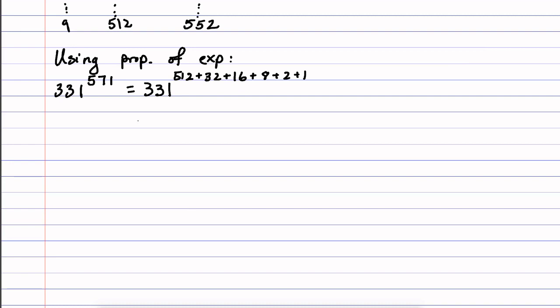512 plus 32 plus 16 plus 8 plus 2 plus 1. And then the point is, this breaks up as a product of 331 to the 512, 331 to the 32, and so on. And all of those powers appear in the table we just created. So 331 to the 512, that was 552. 331 to the 32, that was 784. 331 to the 16, that was 1045. And so on. And we just fill this out.